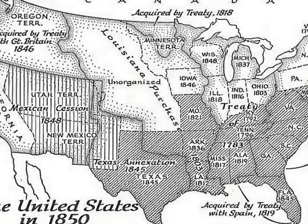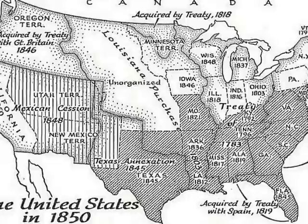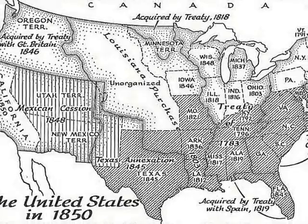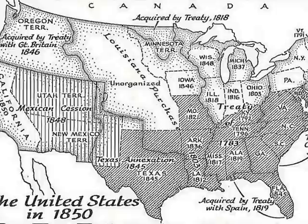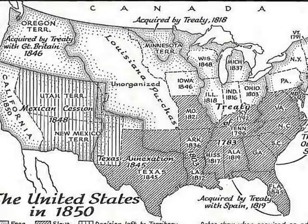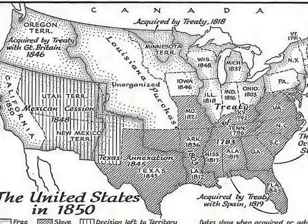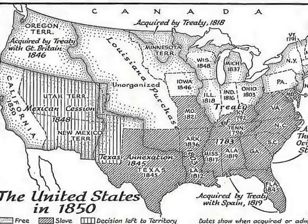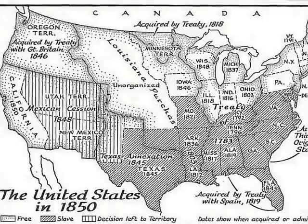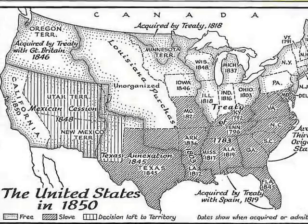In 1850, a compromise was made in hopes of settling the slavery question by giving some satisfaction to both North and South. The compromise allowed slavery to continue but prohibited the slave trade in Washington, D.C. It admitted California to the Union as a free state but gave newly acquired territories from Mexico the right to decide for themselves whether to allow slavery, also known as popular sovereignty.